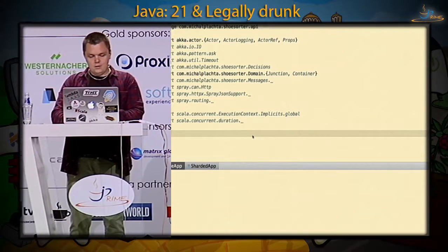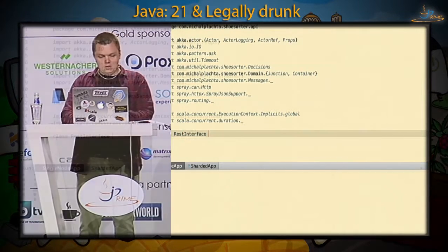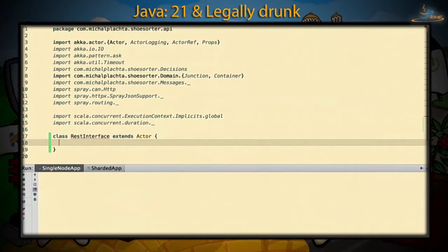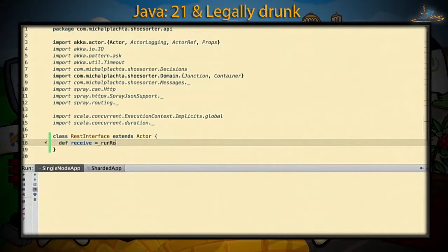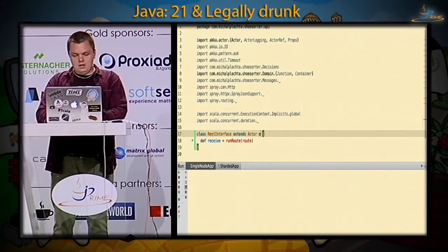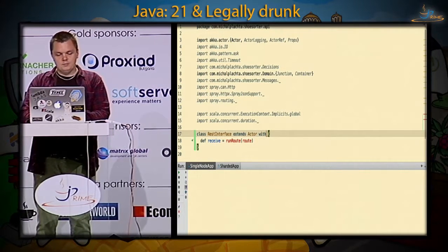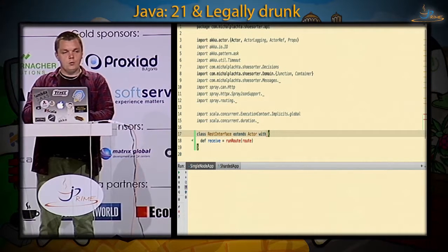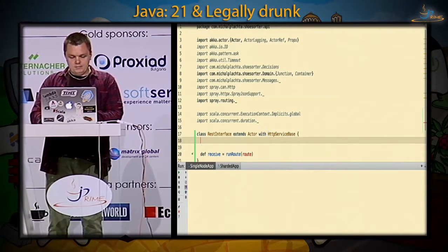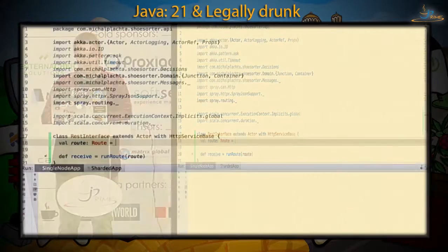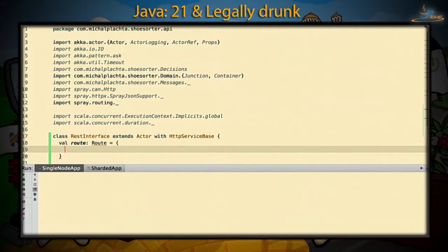Let's code it. We'll create a REST interface actor extending the actor trait. Each actor needs to have a receive method — the only method you need. The receive method will be created using a helper method, run route, because this is an HTTP service. Each HTTP request is modeled as a message, so this actor receives a message for each HTTP request via HTTP service base, and the message goes through the route.